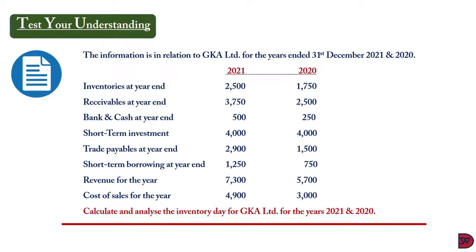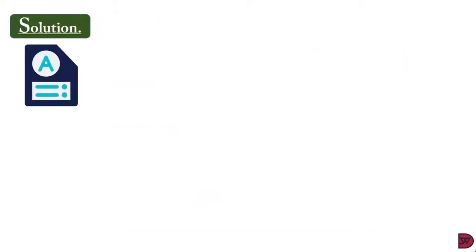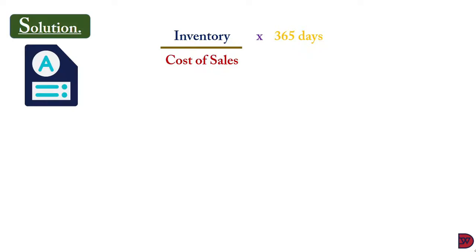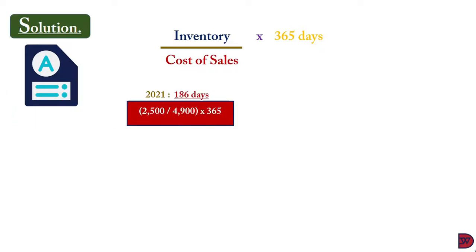The information is in relation to GKA Limited for the years ended 31 December 2021 and 2020. We have inventories, receivables, bank and cash, short-term investment, trade payables, short-term borrowing, revenue, and cost of sales for both years. We are to analyze the inventory days for GKA Limited for both years. Restating the formula — inventory divided by cost of sales multiplied by 365 days — for 2021 the inventory days will be 186. That was arrived at by dividing the inventory of $2,500 by cost of sales of $4,900, multiplied by 365.